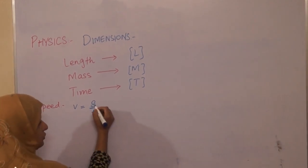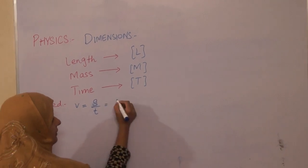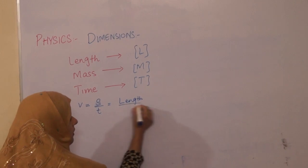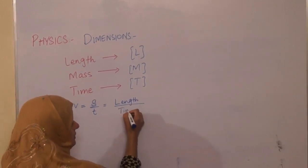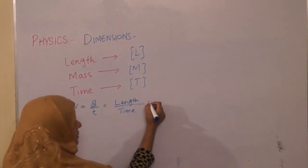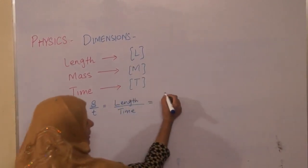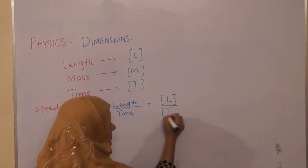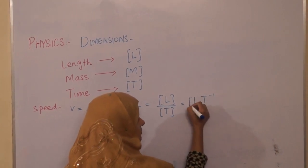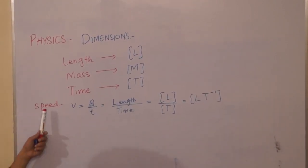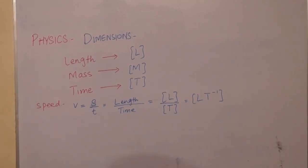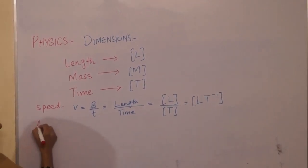As you know, distance is measured in length and time is the standard term used for dimensions. So length is denoted by L and time with T. So we have LT minus one. The dimension of speed is LT to the minus one.